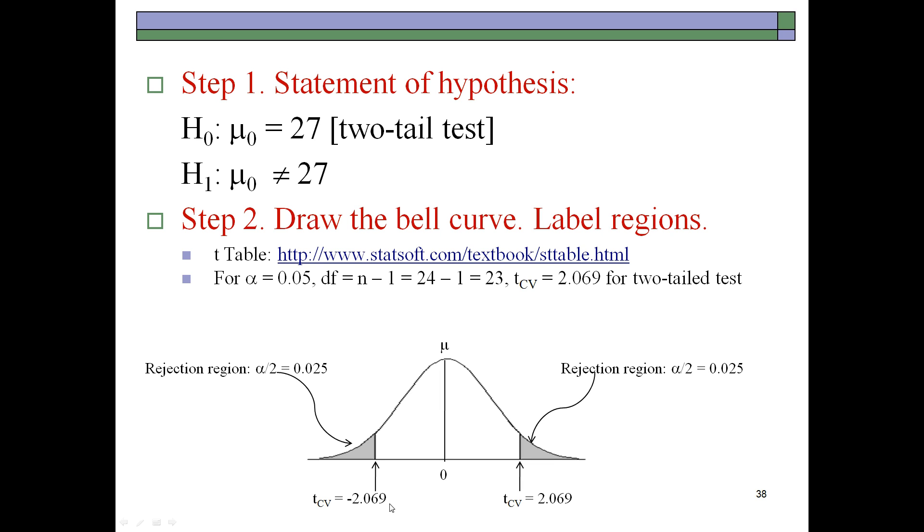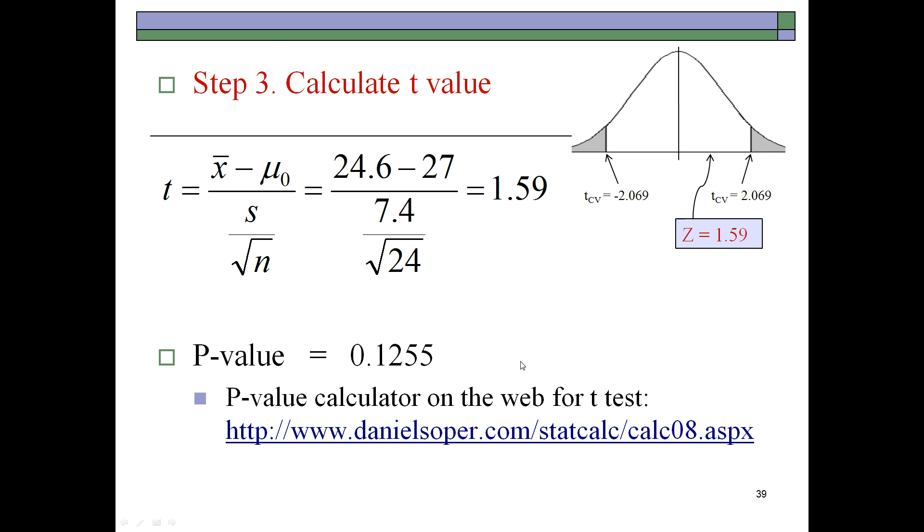Now then, we identify the critical values here on the bell curve and then compute t, which comes out to be 1.59. As you can see here, 1.59 lies in the acceptance region for H0, since in this case it is less than 2.069 and lies between these two limits.